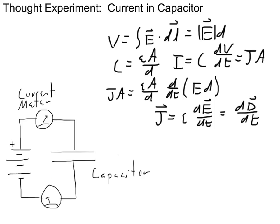We understand this by writing a few simple algebraic expressions for things we already know. The voltage is essentially the line integral of the electric field, and because the electric field in a parallel plate capacitor is essentially constant if we ignore fringing effects, we can write the voltage as the magnitude of the electric field times the spacing d between the plates. The capacitance of a parallel plate capacitor is C equals epsilon times area A divided by spacing d. The current in this circuit is i equals C times dV/dt, and we can write current as i equals j times A, where j is the current density.